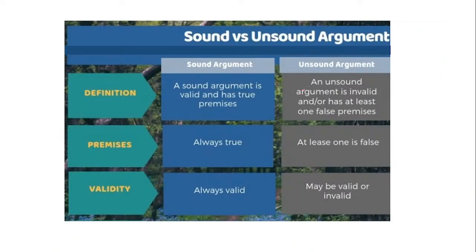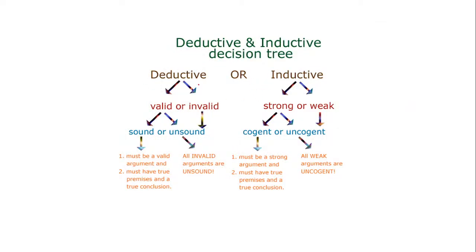In summary: sound argument is valid and has true premises. An unsound argument is invalid or has at least one false premise. For validity: sound argument is always valid; unsound may be valid or invalid. A deductive argument can be valid or invalid; if valid, it is either sound or unsound. If unsound, it could be invalid or have false premises.